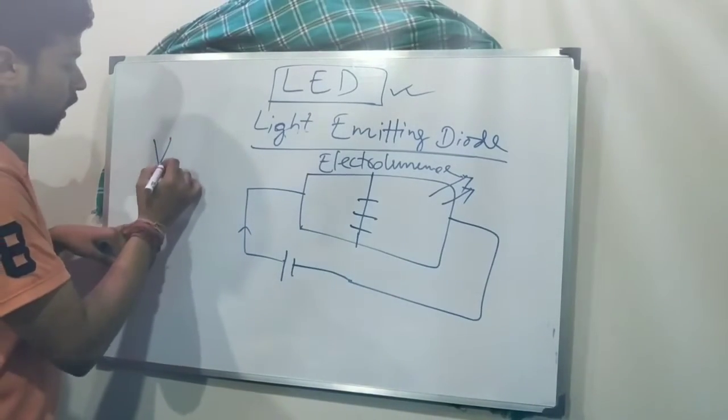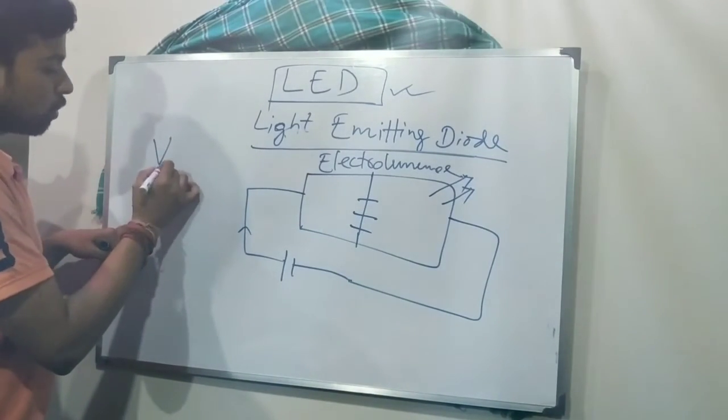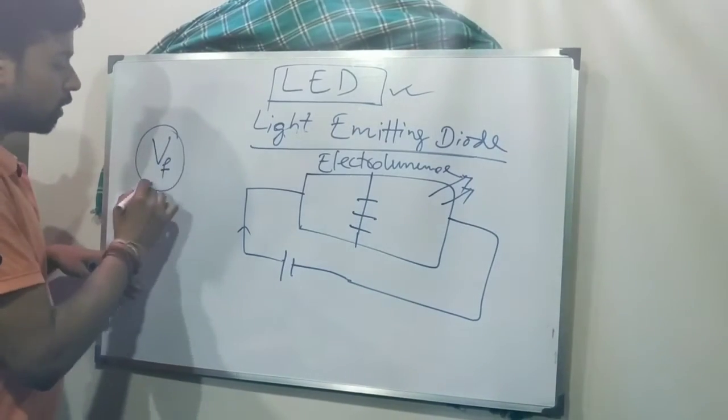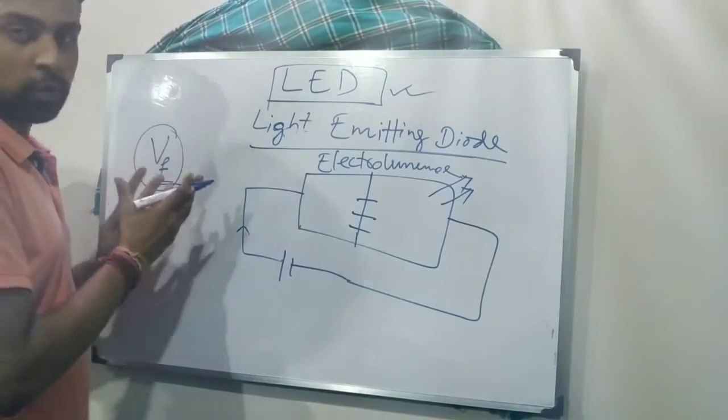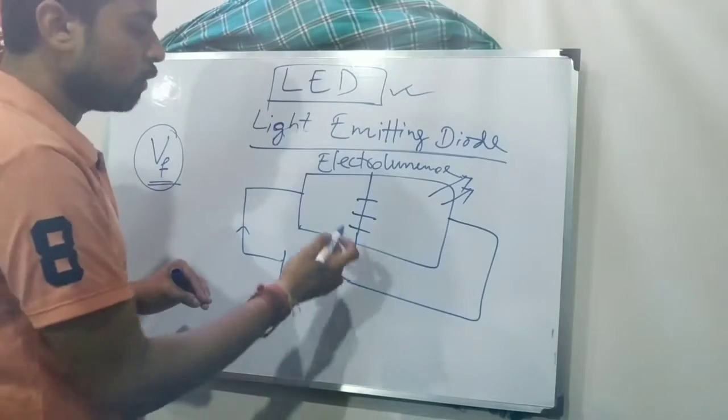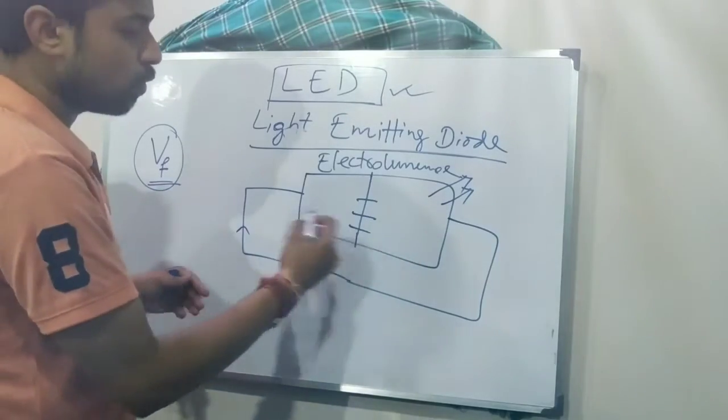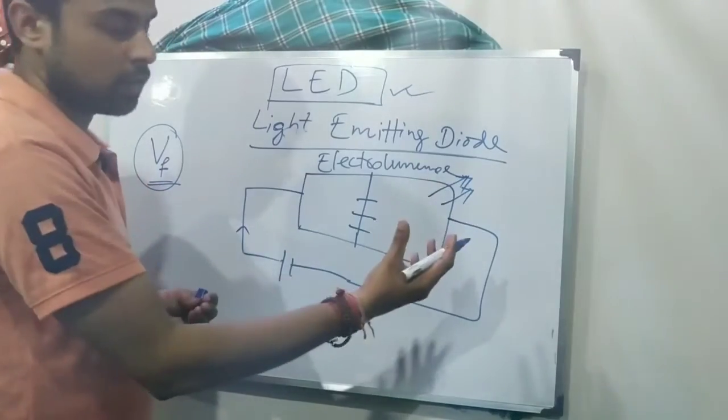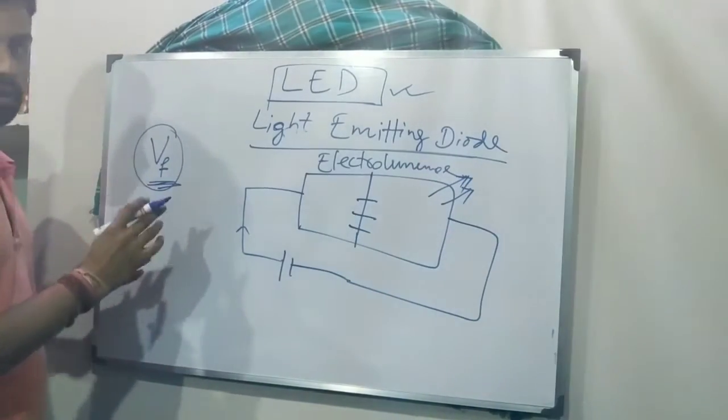So there is the voltage, that is called forward voltage, or we denote it as VF. So this forward voltage is actually the threshold voltage which is required to generate the light. To activate this, so that electron flows from this side to that side, and it is capable of generating light. So that is called the forward voltage.